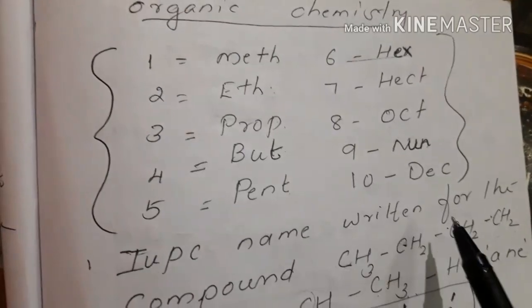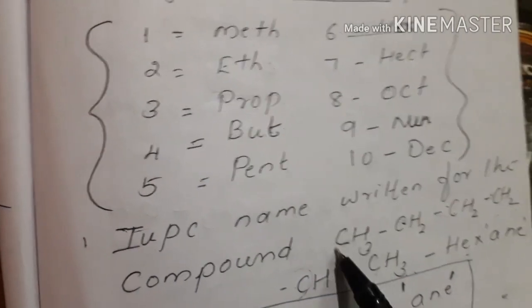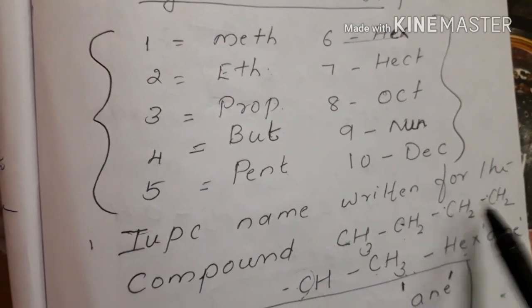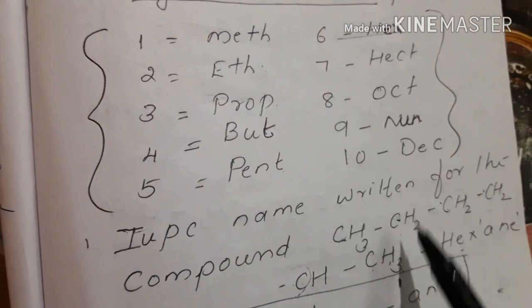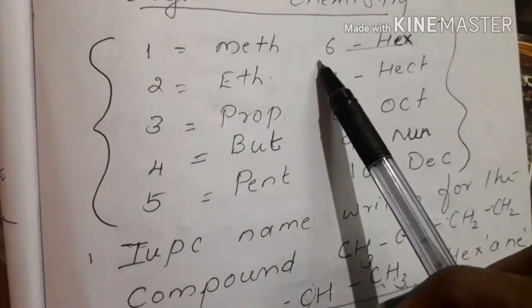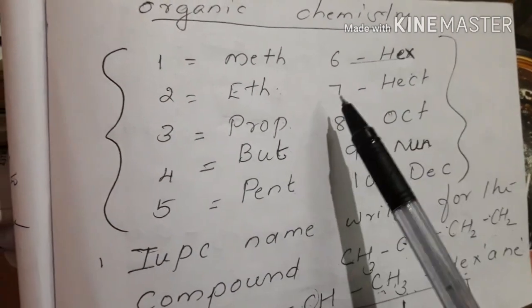We will learn the numbers: 1, 2, 3, 4, 5, 6. This is a compound with 6 carbons. Now, it is hex.